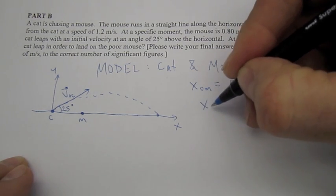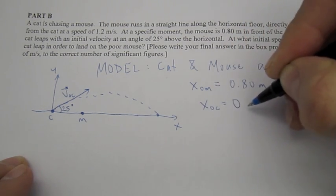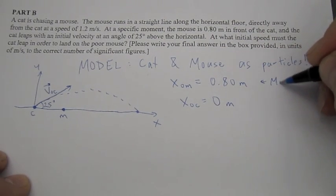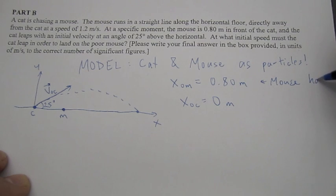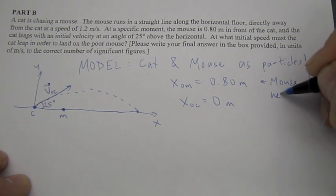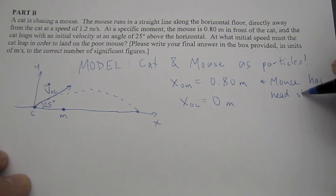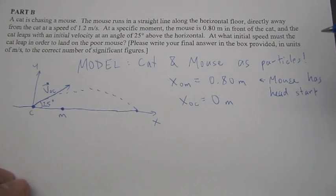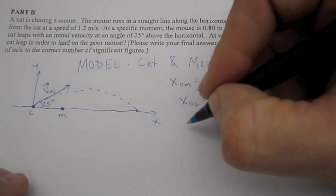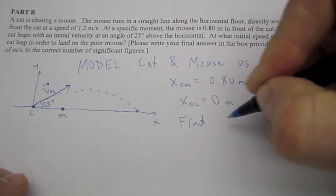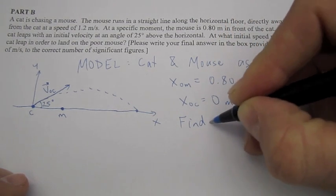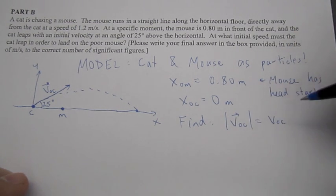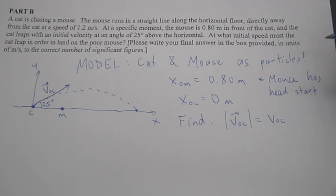And so, the mouse is, if this is Y in that direction, and we'll put X in this direction, then the mouse initial position is 0.8 meters, or 0 meters, to the right of the cat. And the cat is starting at 0 meters, the origin, okay? So, the mouse has a head start. I'll just put here, mouse has a head start.